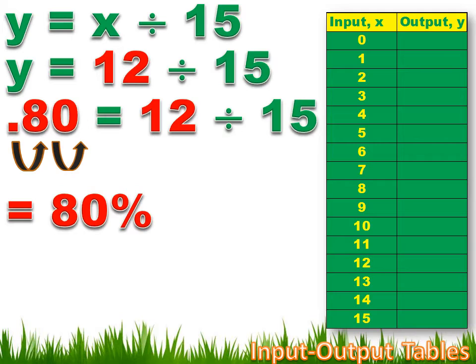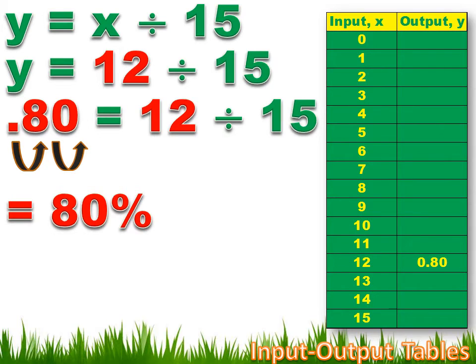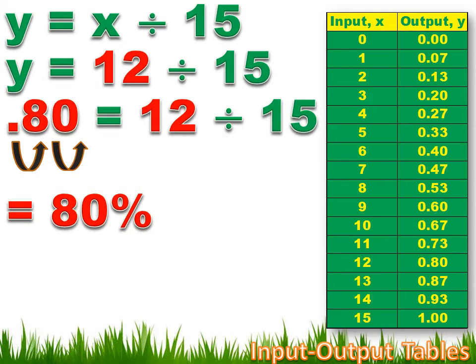Now we could fill this table out by calculating what each of those input values resulted in for Y, our output value, or grade. We've already done the 12. If you got 12 questions correct, we substituted 12 for X and found out that you got a 0.80 on the test, or an 80%. What if you got none correct? Then you'd have Y equals 0 divided by 15, and that equals 0. So you'd get a 0 on the test. If you got one right, then it would be 1 divided by 15, or 0.07. And we could do that for every number between 0 and 15, and we'd have an input-output table for the function Y equals X divided by 15.